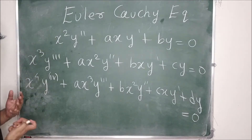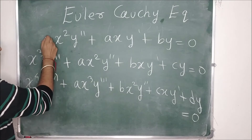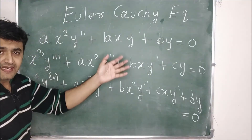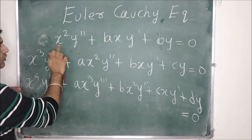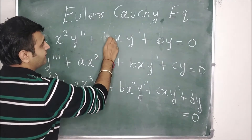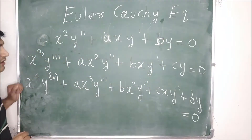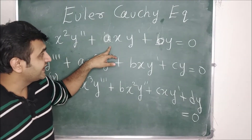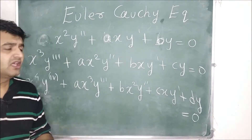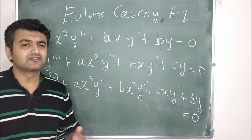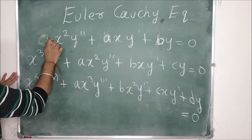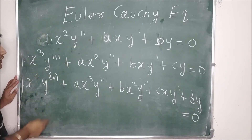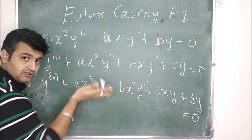Some books write ax² y'' + bxy' + cy, which is also okay, but I prefer to keep the coefficient of y'' as x², the coefficient of y' as ax, and the coefficient of y as b. This gives you fewer constants and makes it easier to solve. If you have some number as the leading coefficient, you just divide by it.